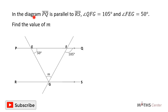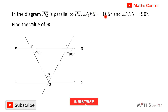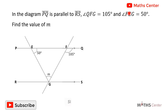In the diagram, the line PKO is parallel to the line RS. Angle KOF is equal to 105 degrees and angle FEG is equal to 50 degrees. Find the value of m.